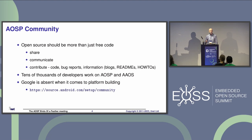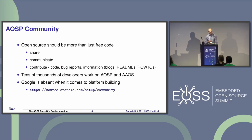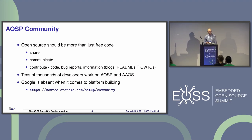Open source, in my opinion, is at least 90% community. The whole point of open source is that there is a community — we can come together, share code, communicate, share bugs, post patches, and so on. And the way that AOSP is structured, none of that happens, or at least none of it happens easily.